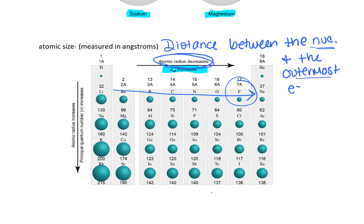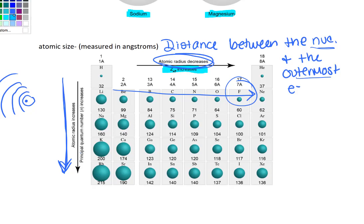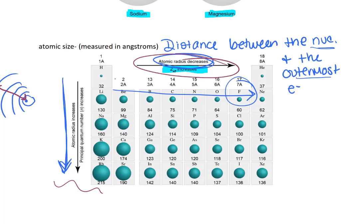The atomic size trend going down a column is not as much related to Z-effective. What matters more here is that as we go down a column, we're adding more layers of electrons onto the atom — hydrogen has one layer, lithium adds another, sodium adds another, potassium another, rubidium another. Adding more layers increases the distance between the nucleus and the outermost electron. This one tends to make intuitive sense, whereas the left-to-right trend confuses some people.